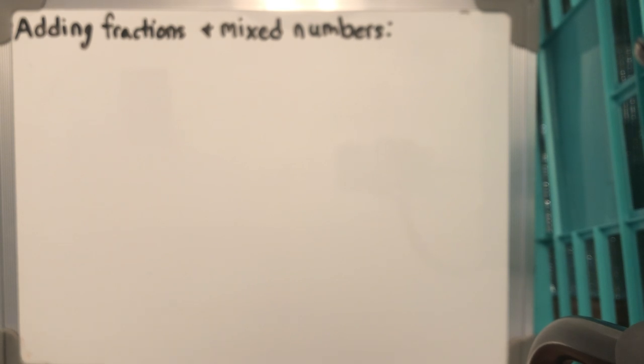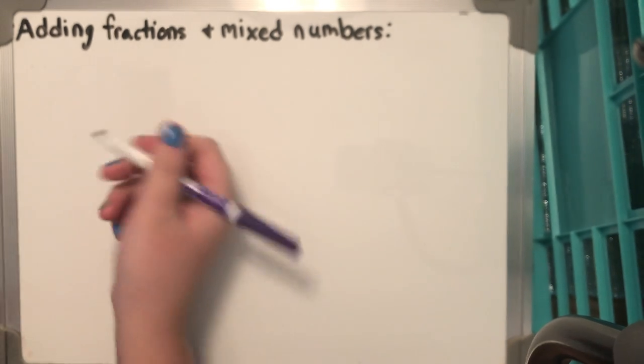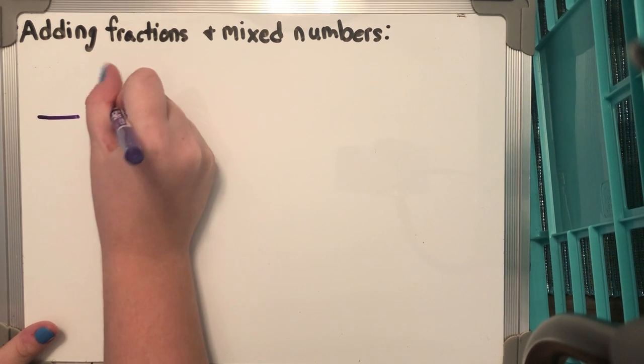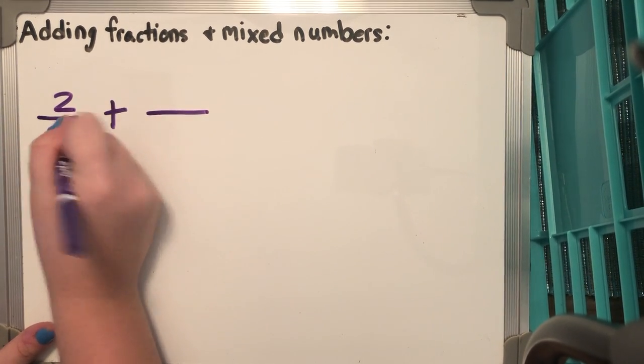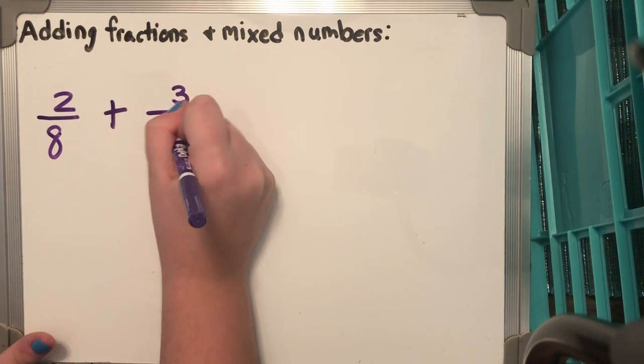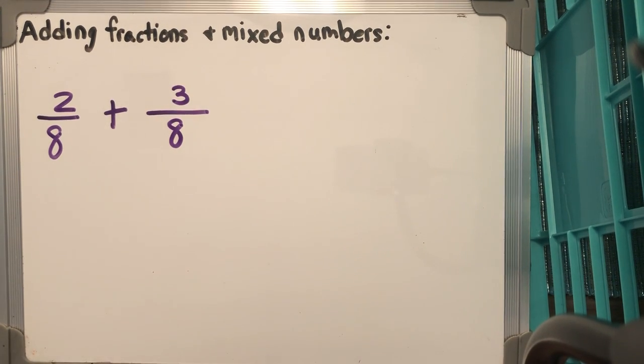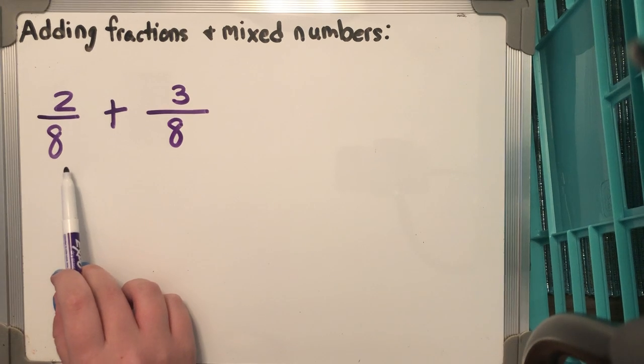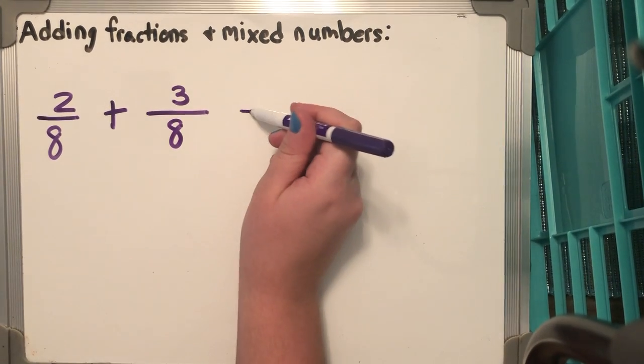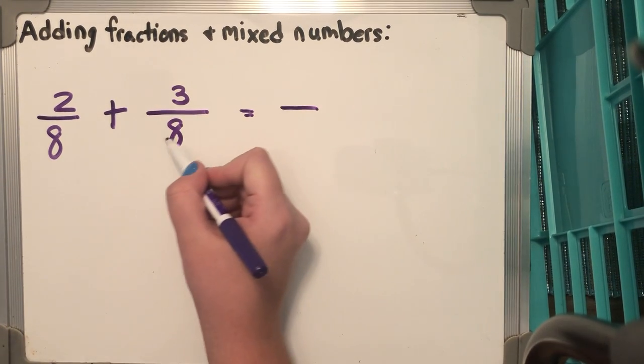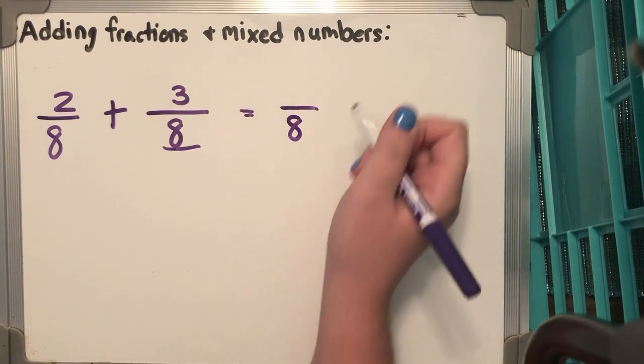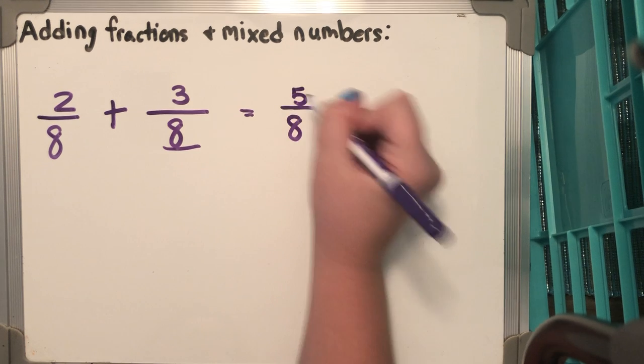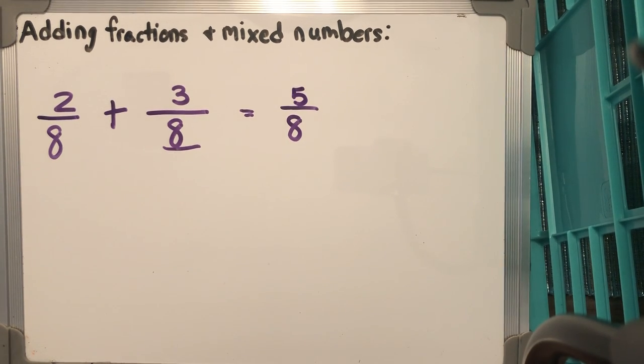Now remember, when we're adding fractions, we get to add fractions with a common denominator. So let's for example, have 2/8 + 3/8. We don't have to do anything but just add across. Our bottom denominator, the 8 right here, remains the same and we just add the numerators. So 2 + 3 = 5. So we get 2/8 + 3/8 is going to give us 5/8.